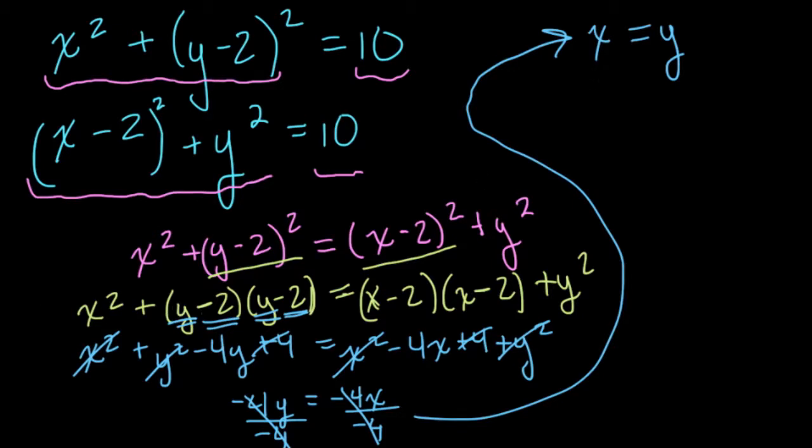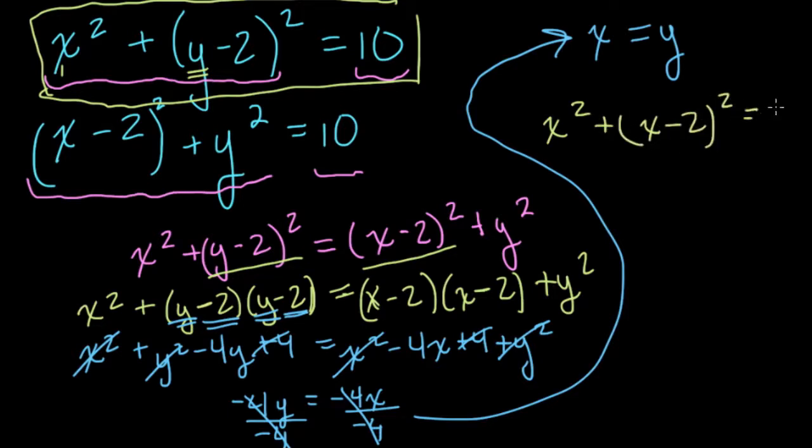And we can actually substitute this back in to solve. I'm going to substitute it back into this formula, although I can choose either one. All I'm going to do is plug in x for y because we know that when these two equations meet, x and y will be equal. So we have x squared plus (x-2) squared equals 10.